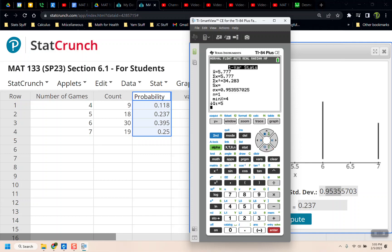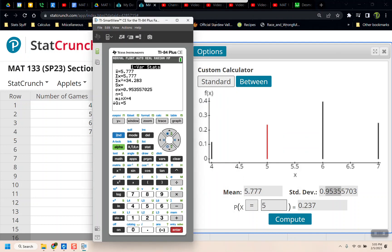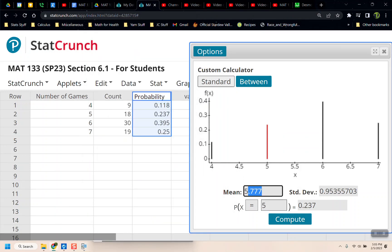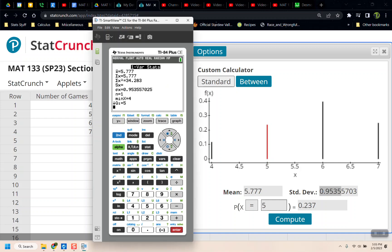There's the 5.777 at the top, and there's the sigma, which is 0.9535. So you can see the values it's coming up with match what we got with StatCrunch. It's the same numbers, but just calculated differently. Well, calculated with a calculator instead.